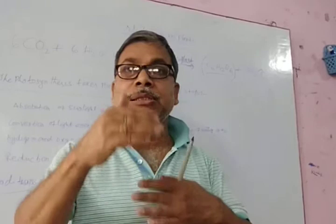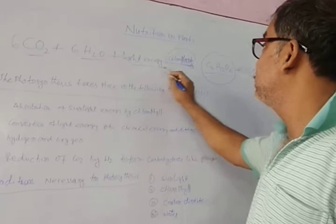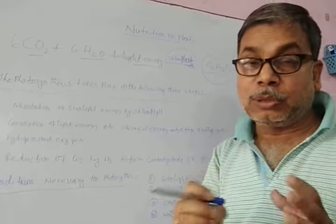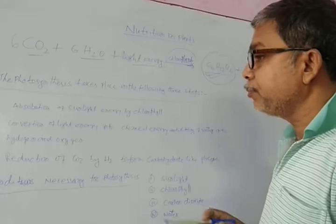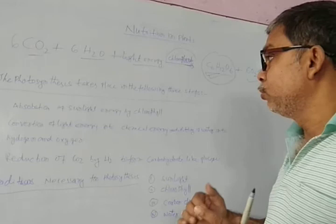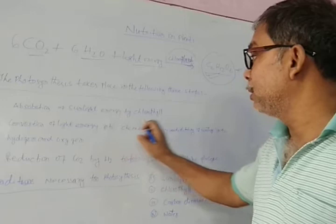For food preparation through photosynthesis, the requirements are carbon dioxide gas, water, light energy, and green leaves containing chlorophyll. So actually, the absorption of sunlight energy by chlorophyll is the starting point.